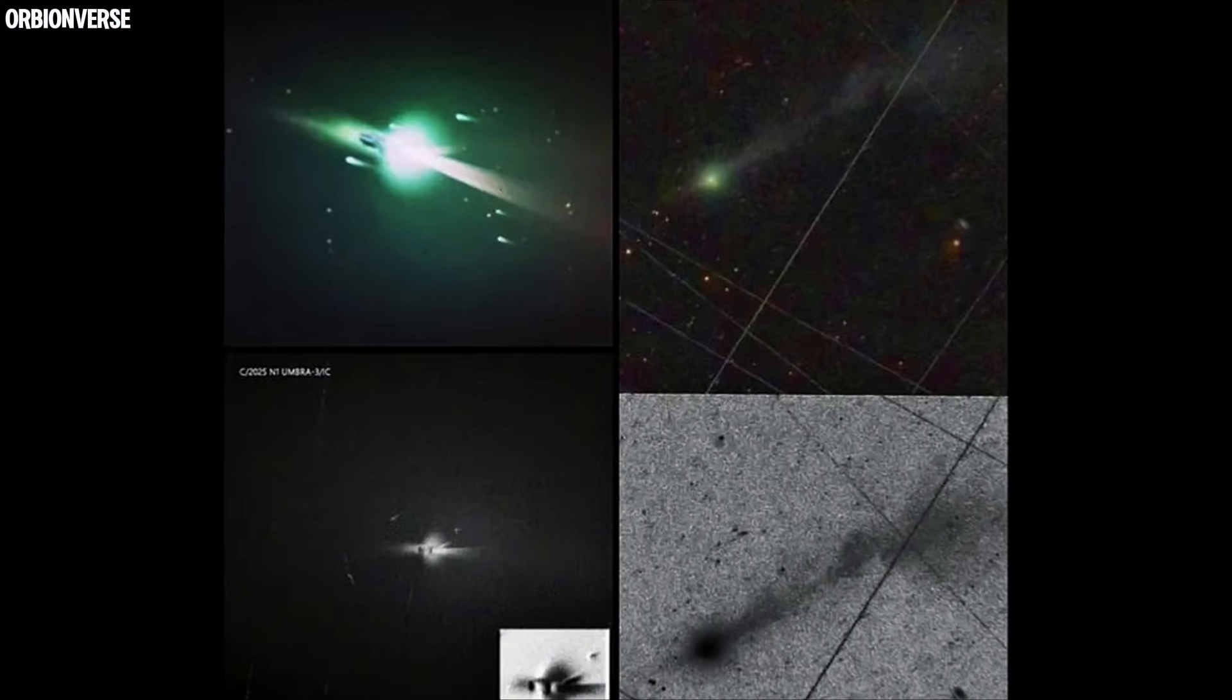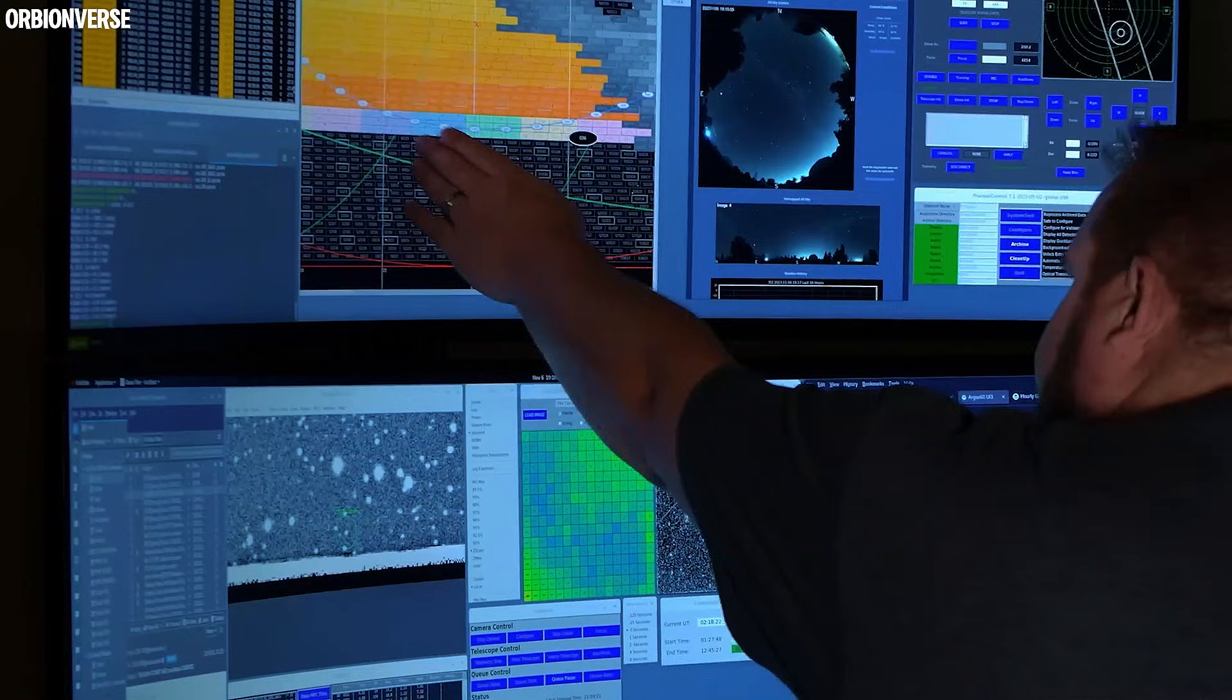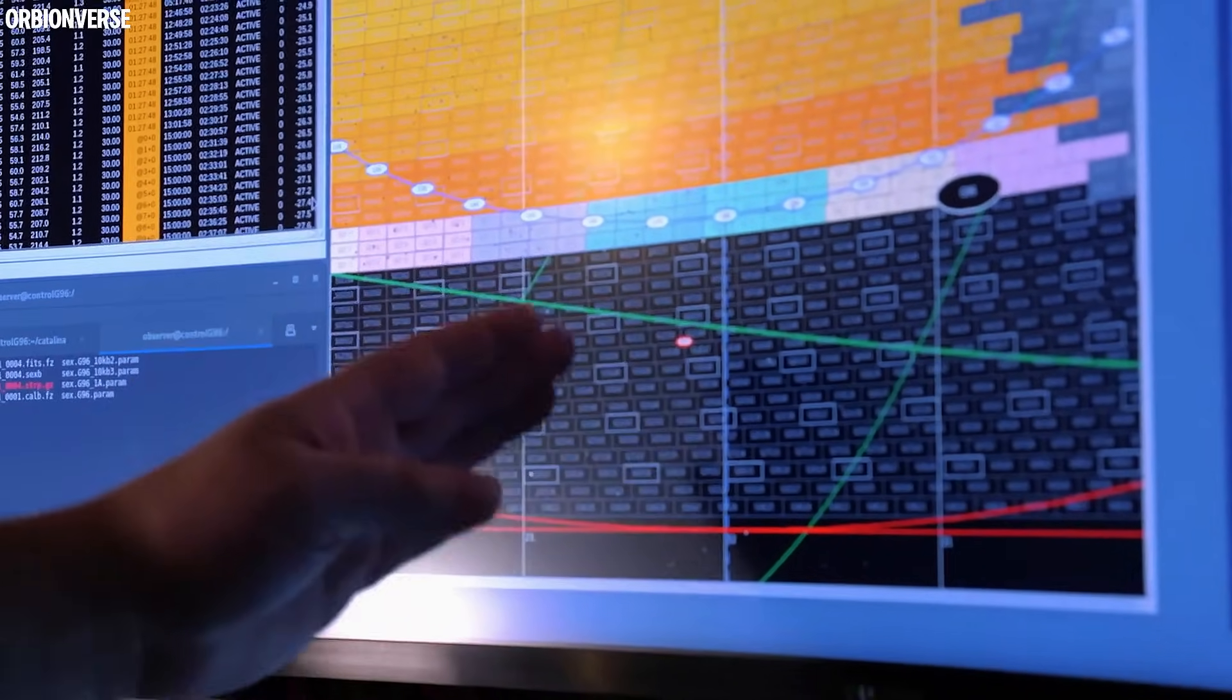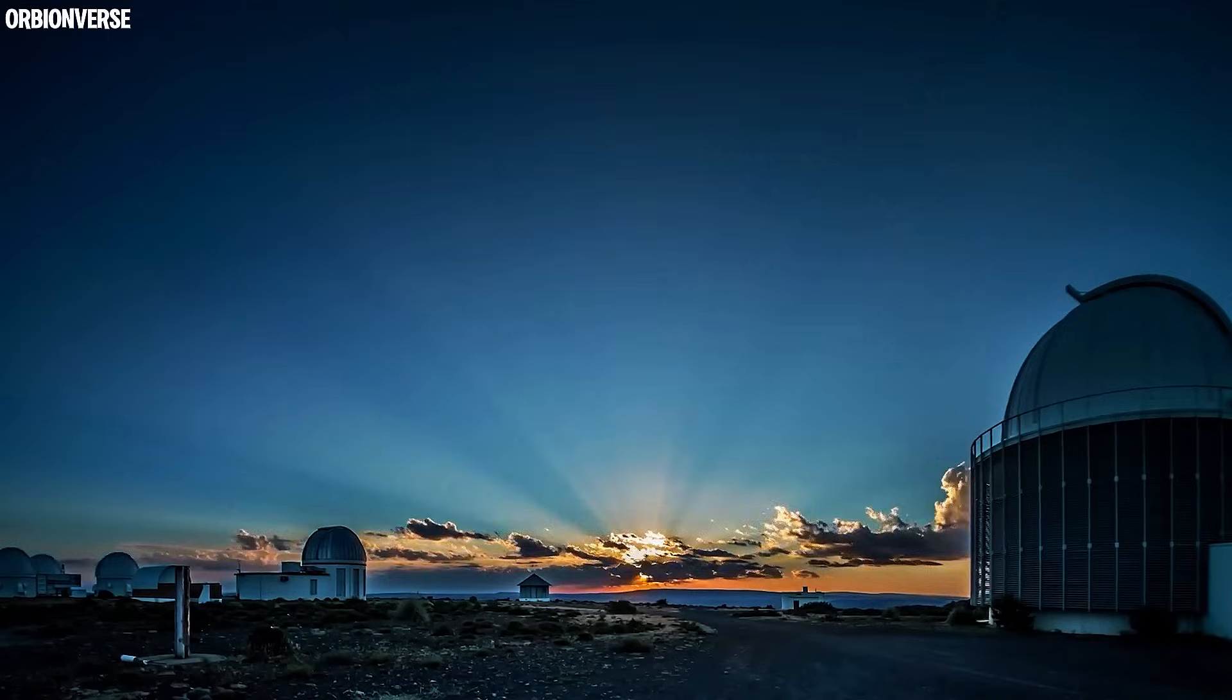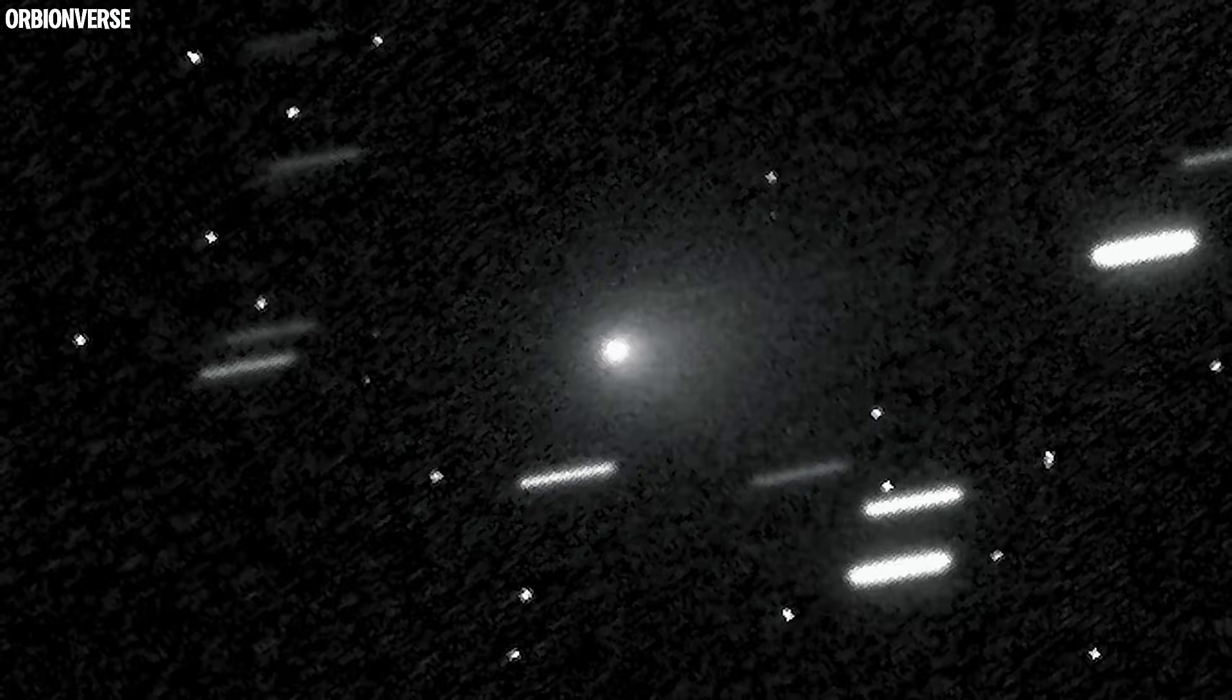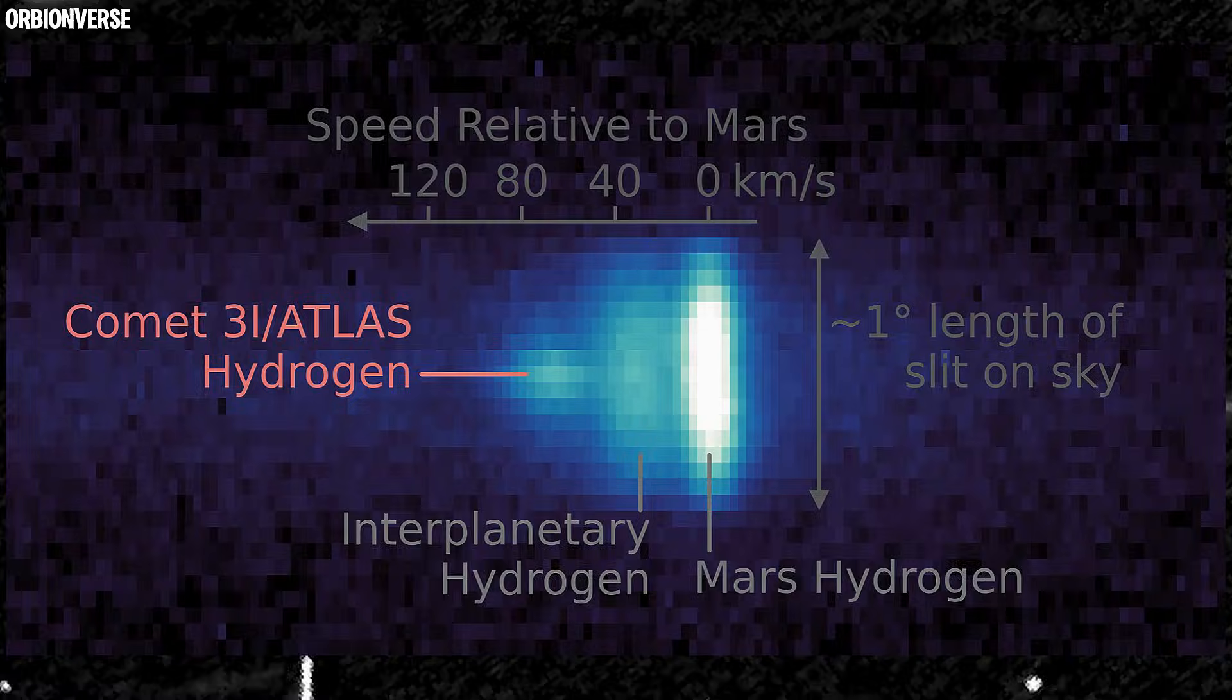This is Comet 3i Atlas, an object that has been defying predictions, breaking patterns, and forcing astronomers to rewrite their own models in real time. People around the world are looking up and asking the same question: What is happening to 3i Atlas? And why does it look like it's expanding so fast?